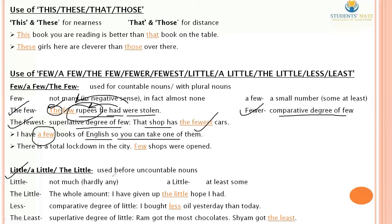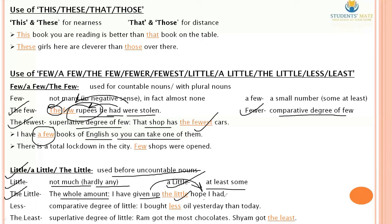Example of 'the little': 'I have given up the little hope I had' — hope is made particular here, so 'the little' is used. 'Less' is the comparative degree of 'little'. Example: 'I bought less oil yesterday than today.' 'Least' is the superlative degree of 'little'. Example: 'Ram got the most chocolates; Sham got the least.'